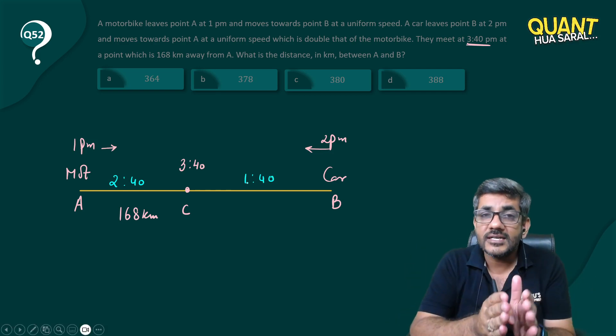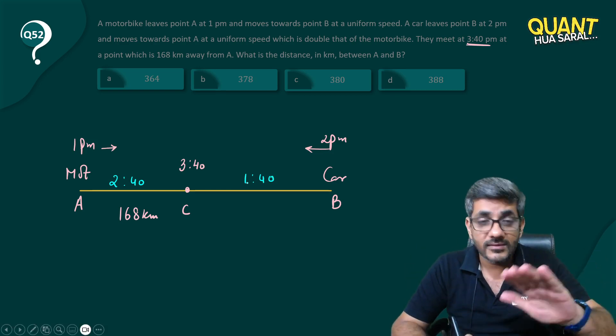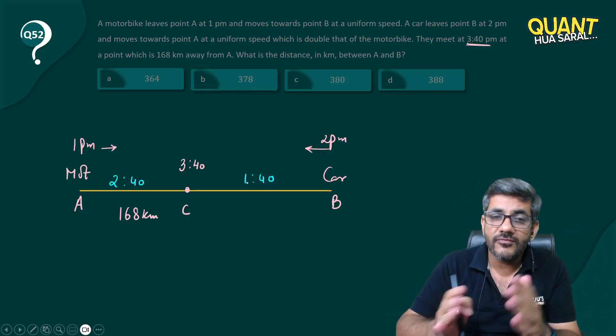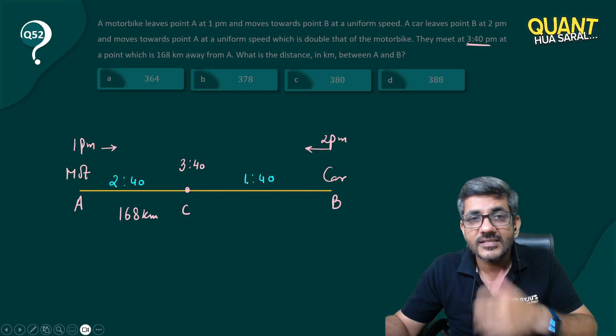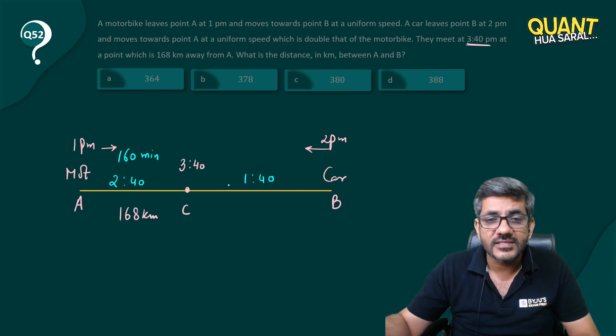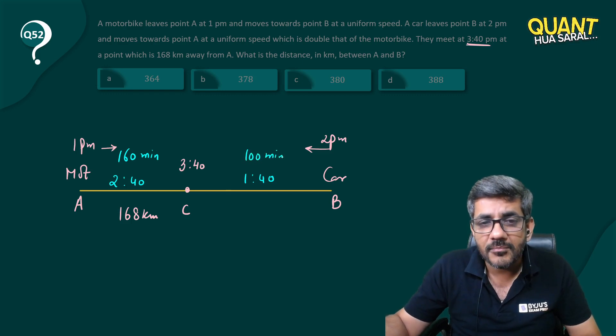Or you can say 160 minutes is the time taken by A to reach C, and 100 minutes is the time taken by B to reach C. In these 160 minutes, A has covered 168 kilometers. The question asks what is the distance between A and B, and the other thing given to us is that speed of car is double the speed of the motorbike.